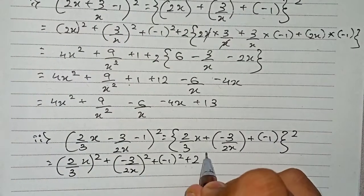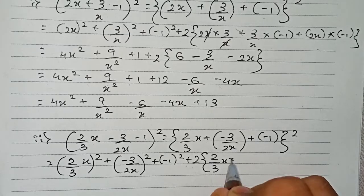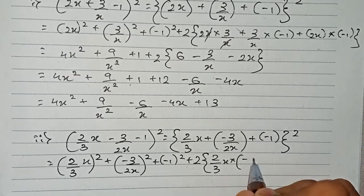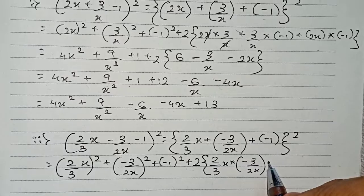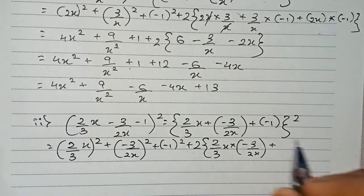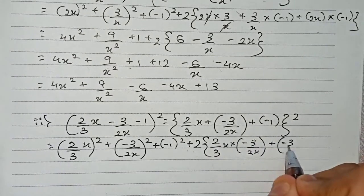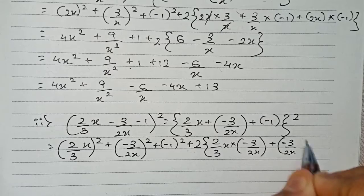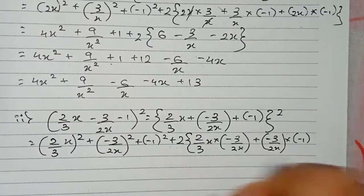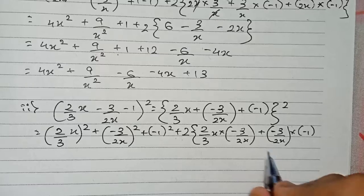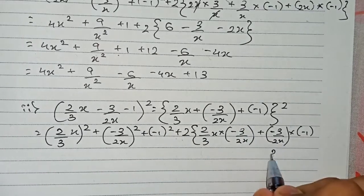Then plus 2 into: 2/3x × (-3/2x) as ab, plus (-3/2x) × (-1) as bc, and finally 2/3x × (-1) as ca.